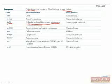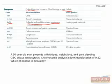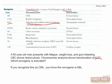The questions that you might see are usually pretty straightforward. For example, a 60-year-old man presents with fatigue, weight loss, and gum bleeding. CBC shows leukocytosis. Chromosome analysis shows a translocation of 9;22. Which oncogene is activated? Well, if you recognize the symptoms here as CML, you know the oncogene has to be the ABL oncogene.